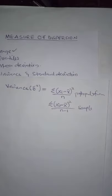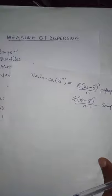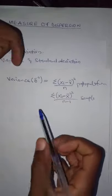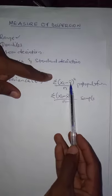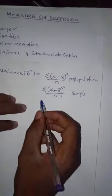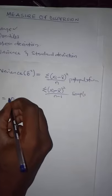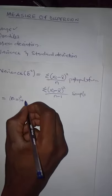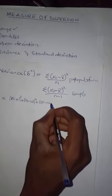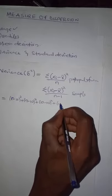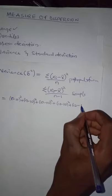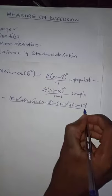Considering the data we have — 8, 9, 10, 11, 12 — to find the variance, we take each value, subtract the mean, and then square it, and take the summation of all. So we compute: (8 − 10)² + (9 − 10)² + (10 − 10)² + (11 − 10)² + (12 − 10)², all divided by 5.